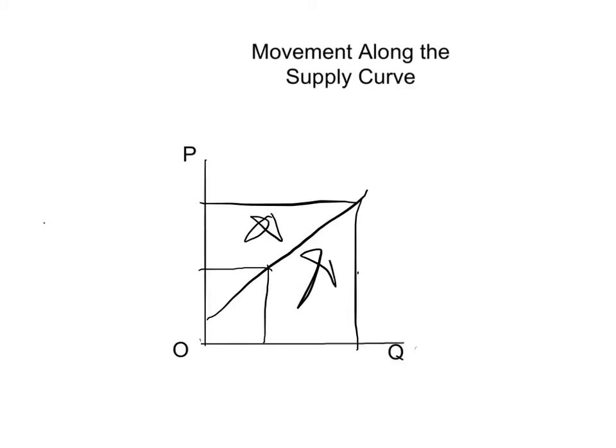The price and quantity move along the supply curve, which you can also see with the lines moving along the supply curve.